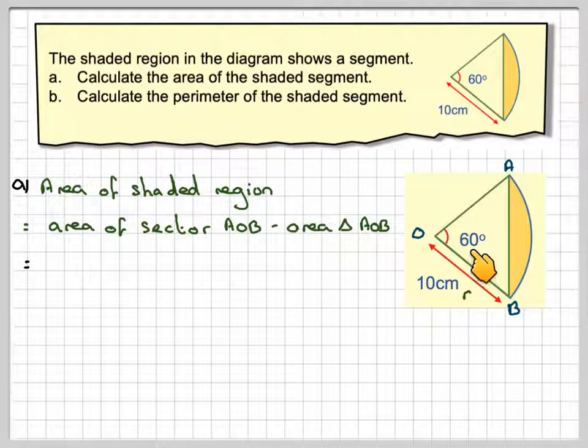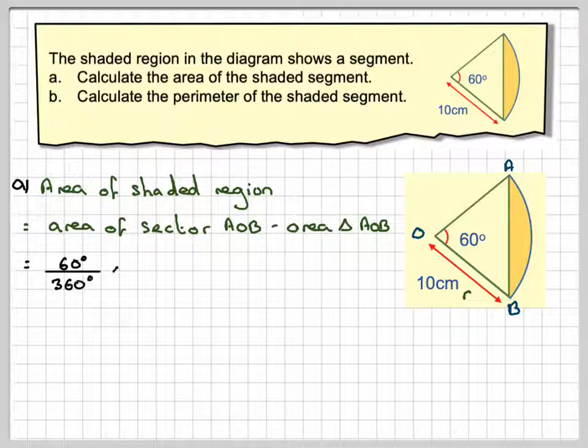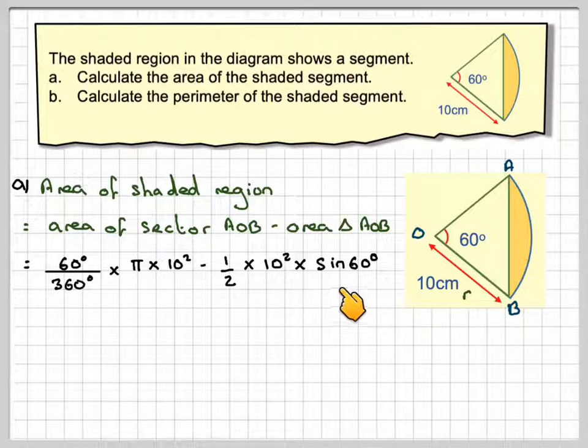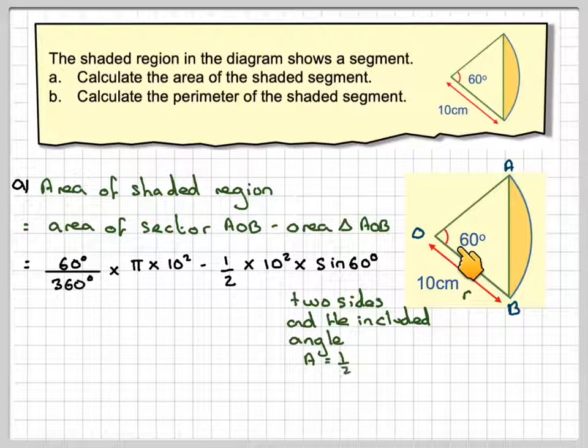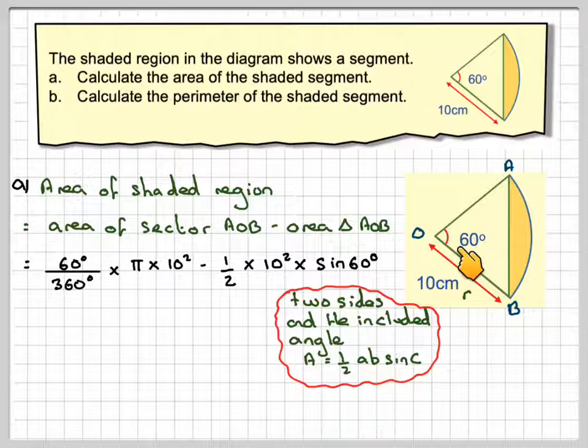So this is 60 because it's part of a circle, so it's 60 out of 360 of an area of a circle. The area of a circle is pi r squared, so it's pi times 10 squared. Now, to find the area of this triangle, one way would be to do a half times 10 squared times sine of 60. This is how you find the area of a triangle when you know two sides and the included angle. It comes from a half AB sine C.